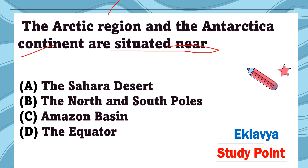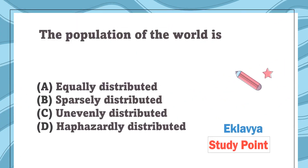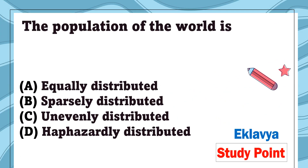Question 3: The Arctic region and the Antarctic continent are situated near — option A: the Sahara Desert, option B: the North and South Poles, option C: the Amazon Basin, option D: the equator. The correct answer is the North and South Poles, because the Arctic region is near the North Pole and the Antarctic continent is near the South Pole.